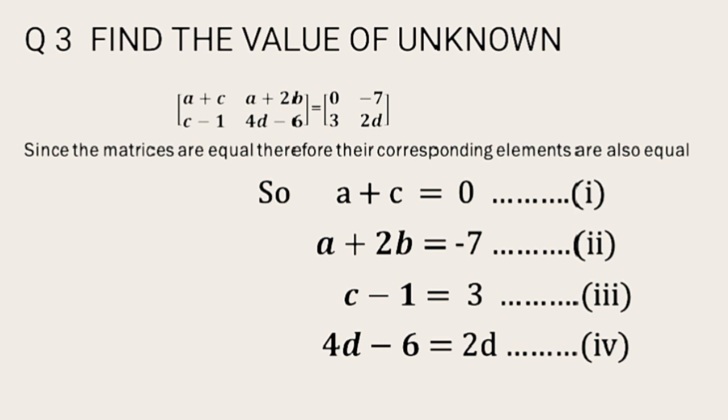So now we have 4 equations. By corresponding elements matching, we shall get a plus c equals 0, a plus 2b equals -7, c minus 1 equals 3, and 4d minus 6 equals 2d.